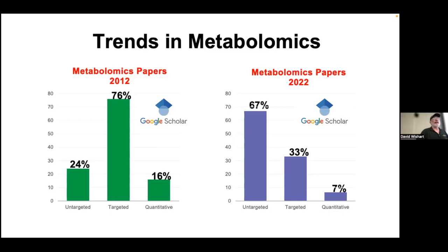In the early days of metabolomics, targeted was the most common approach—76% of all papers 10 or 12 years ago were targeted. Untargeted was rare at 24%. And of those targeted papers, even fewer were doing truly quantitative metabolomics—using reference standards, calibration standards, C13 isotopes. Now in 2022, almost two-thirds of papers are untargeted and one-third are targeted, and the percentage of quantitative metabolomics papers has continued to drop.